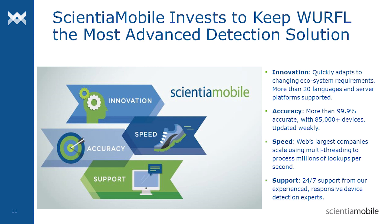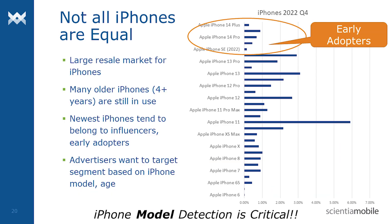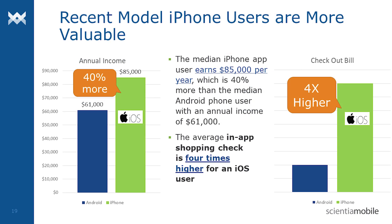At the end of the day, you can continue to receive the same accuracy, performance, innovation, and support from Warfel and Scientia Mobile. In fact, now is a good time to upgrade your device detection. Identifying the specific device model of an Apple iPhone has great value — iPhone users with recent models have 40% more income than Android users, and they are twice as likely to check out from an e-commerce site with a shopping cart that is four times larger than an Android user's.